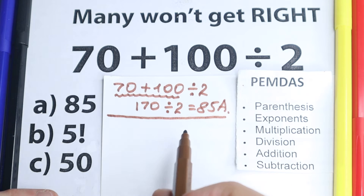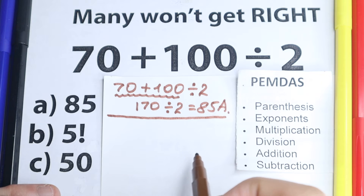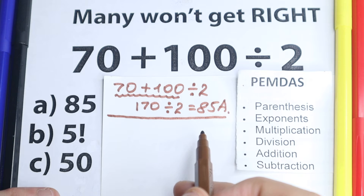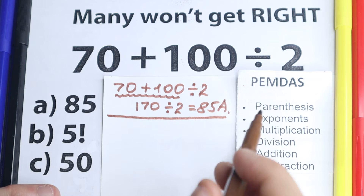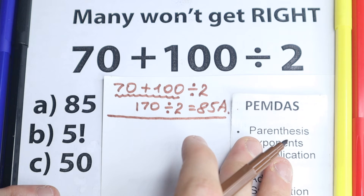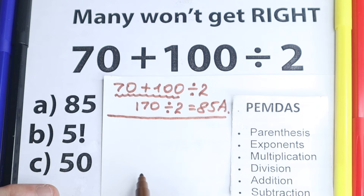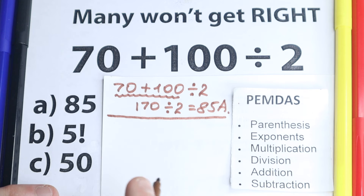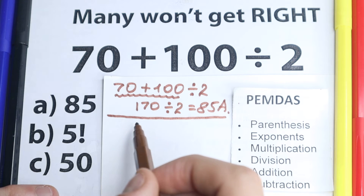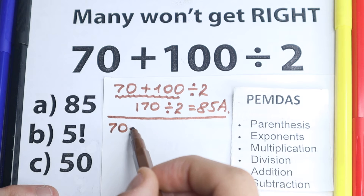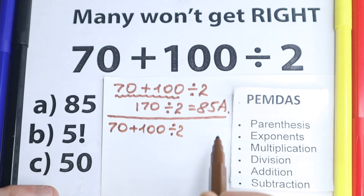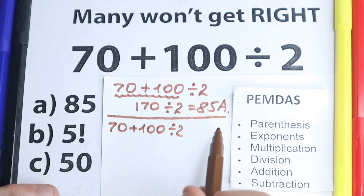This is the correct order of operations. Let's solve this according to PEMDAS. I respect every order of operations — BODMAS and others — but let's look at this question through PEMDAS. So we have 70 plus 100 divided by 2. PEMDAS works from the top to the bottom and we can go through the steps quickly.